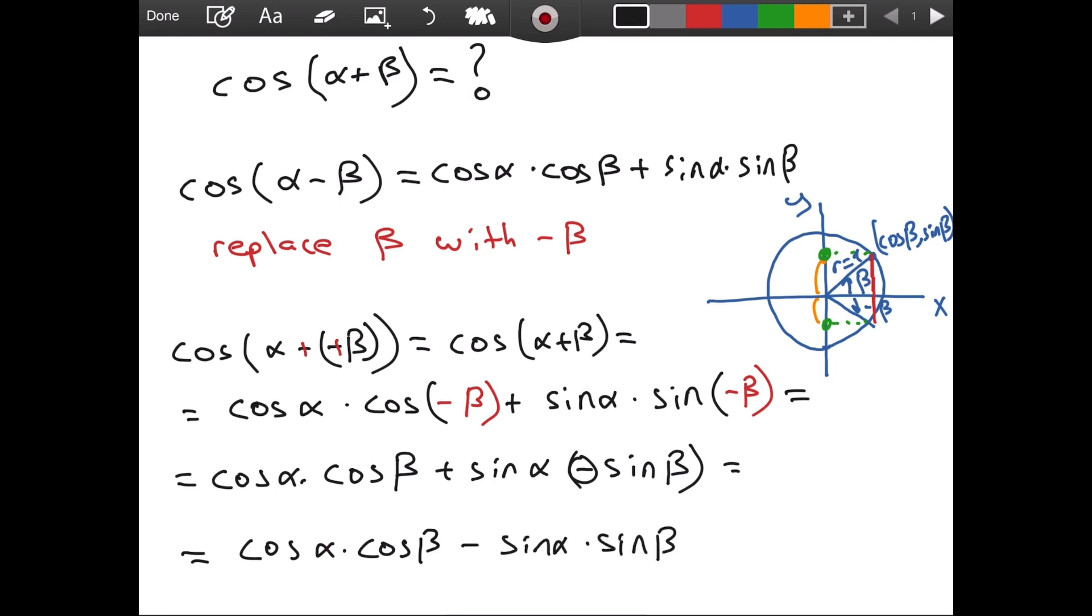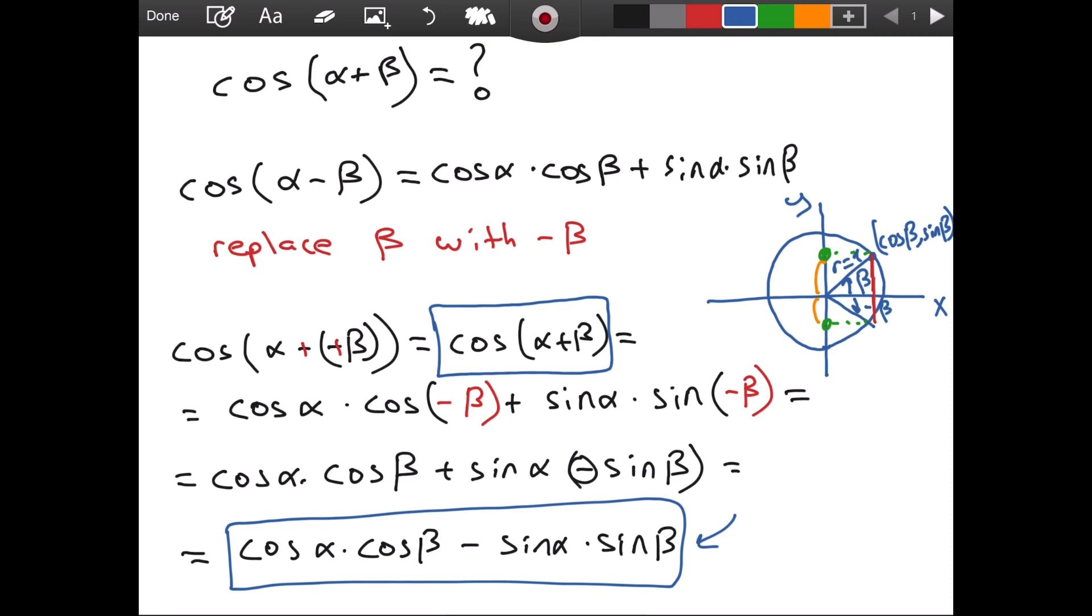And this is our final result because notice, we only have alpha and beta here. And this is equal to cosine of alpha plus beta. So, we just derived the formula for finding the cosine of two, finding the cosine of the sum of two angles. It turns out you have a very similar formula that we had for the difference. The only change is the positive here becomes a negative here.